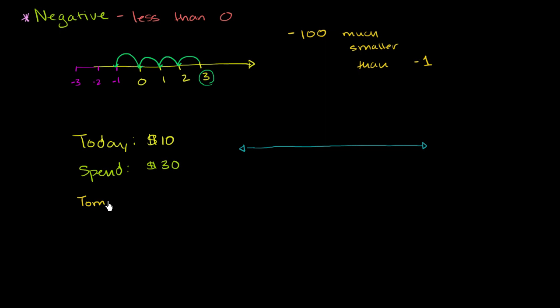So tomorrow, what is my bank account? So you might immediately say, look, if I have $10 and I spend $30, there's $20 that had to come from someplace. And that $20 is coming from the bank. So I'm going to owe the bank $20.